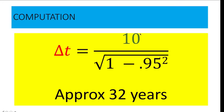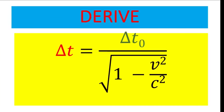When we apply the time dilation formula to this twin brothers case, the computation goes this way. The time as experienced by the astronaut using his clock in his inertial frame of reference is 10 years. But the time as observed by his earthbound brother is computed as 10 over the square root of 1 minus 0.95 squared, giving approximately 32 years. That is why the brother aged 32 years compared to the astronaut's 10 years.